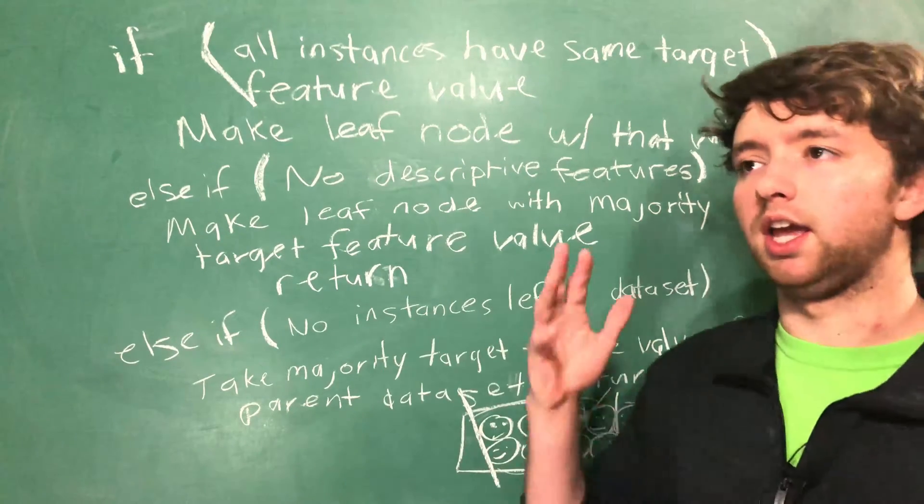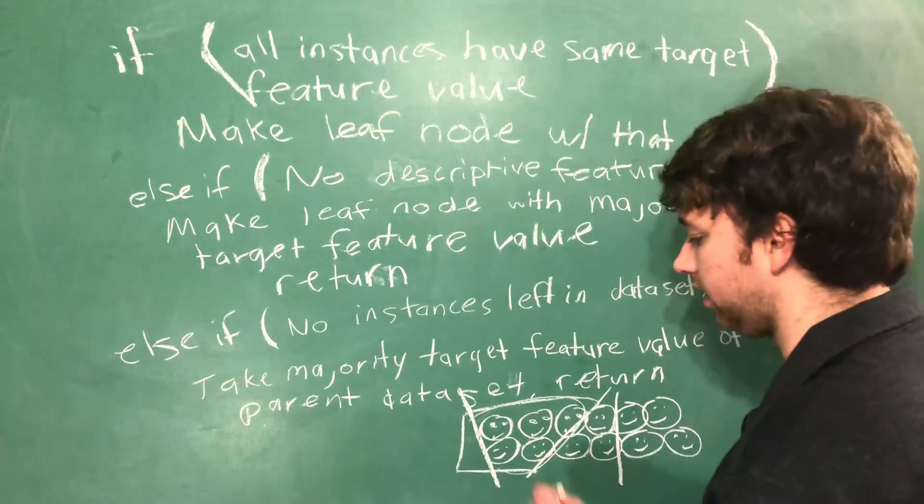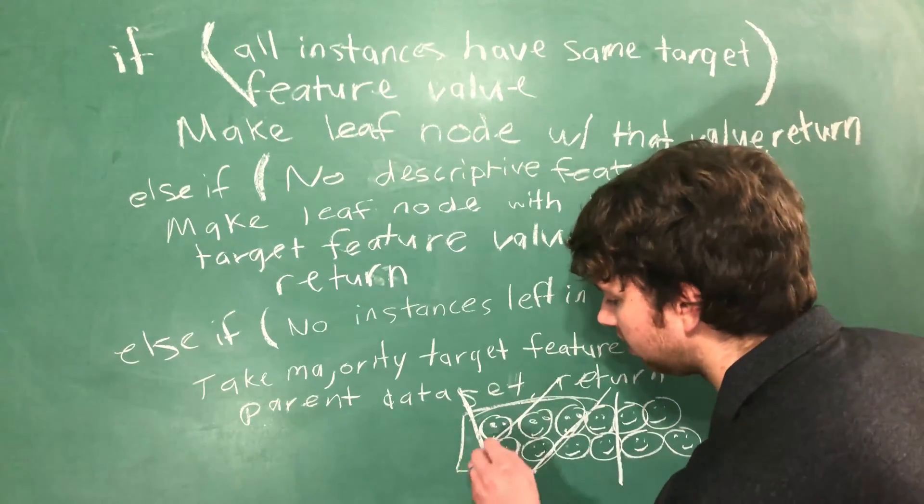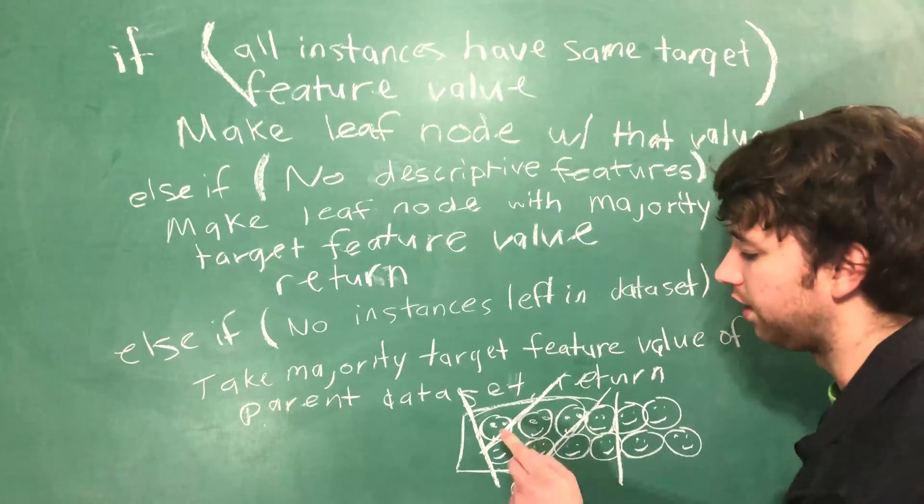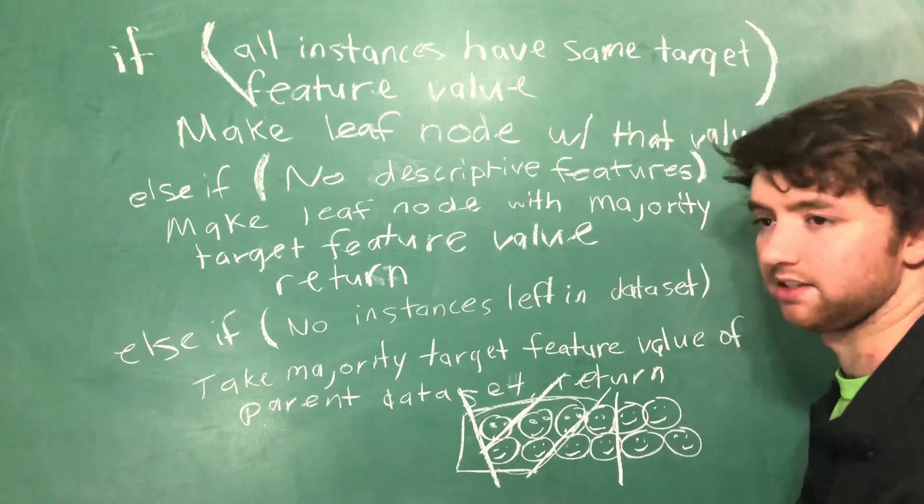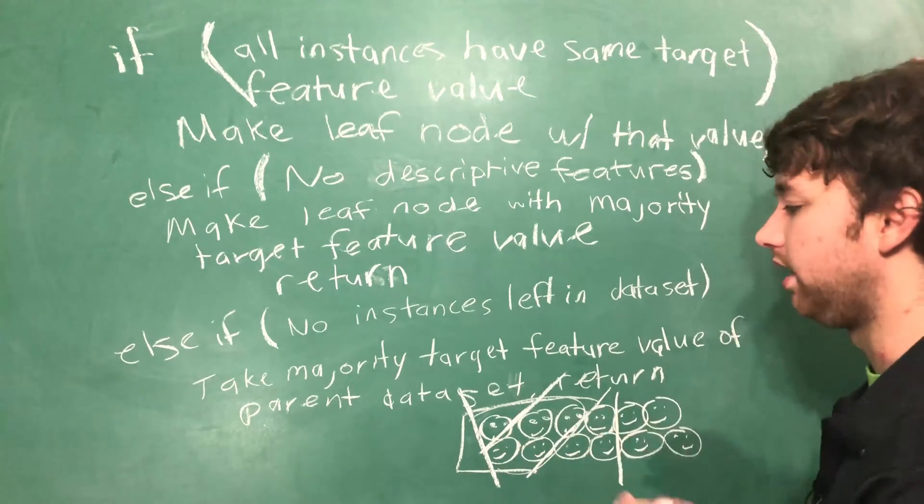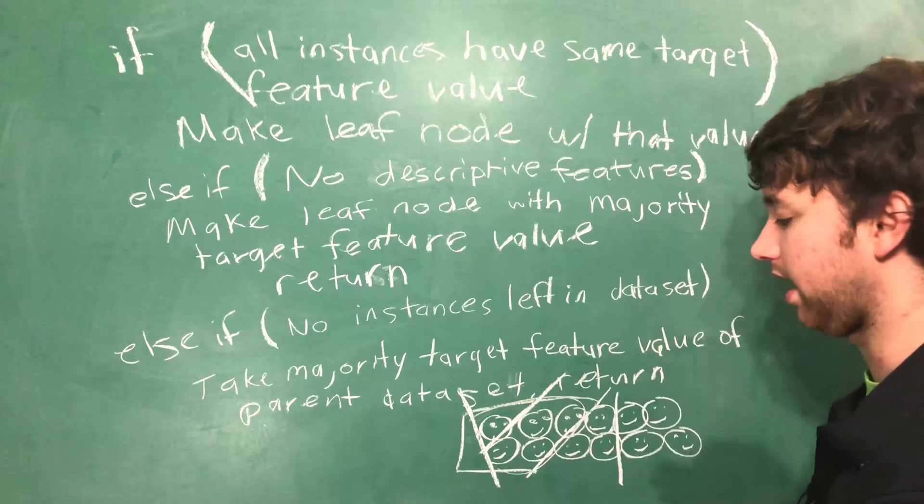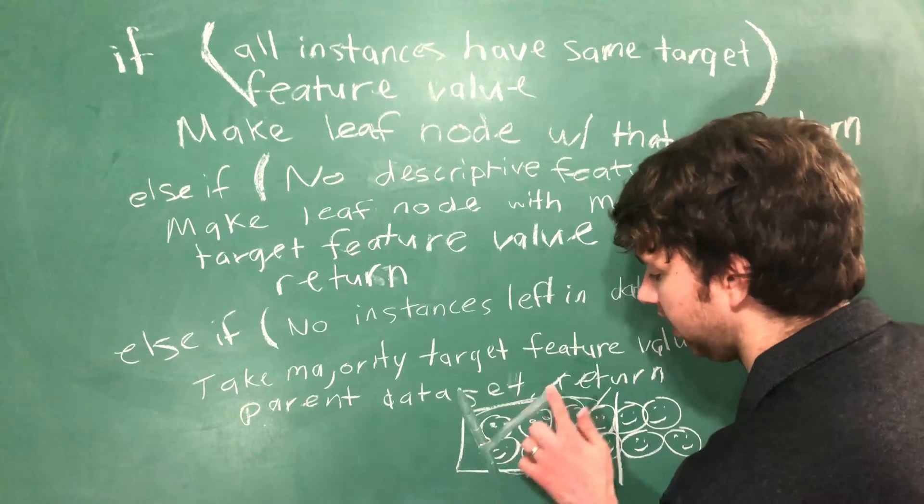It might split like this to where one group has four, another group has one, and then a group has zero. When this happens what we're going to do is take the parent data set, meaning the node before the split, so get rid of this split here and just take this data set.